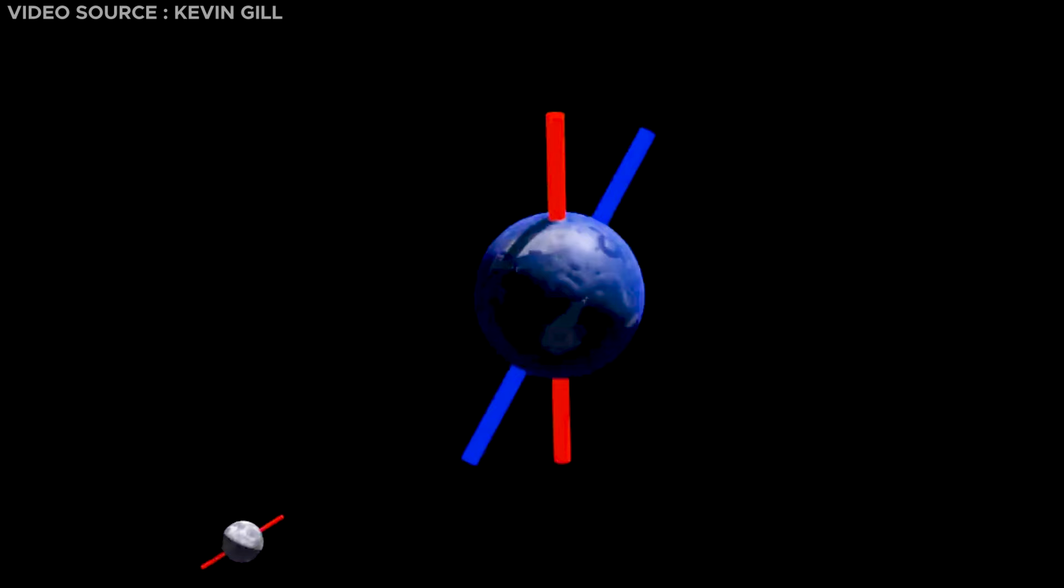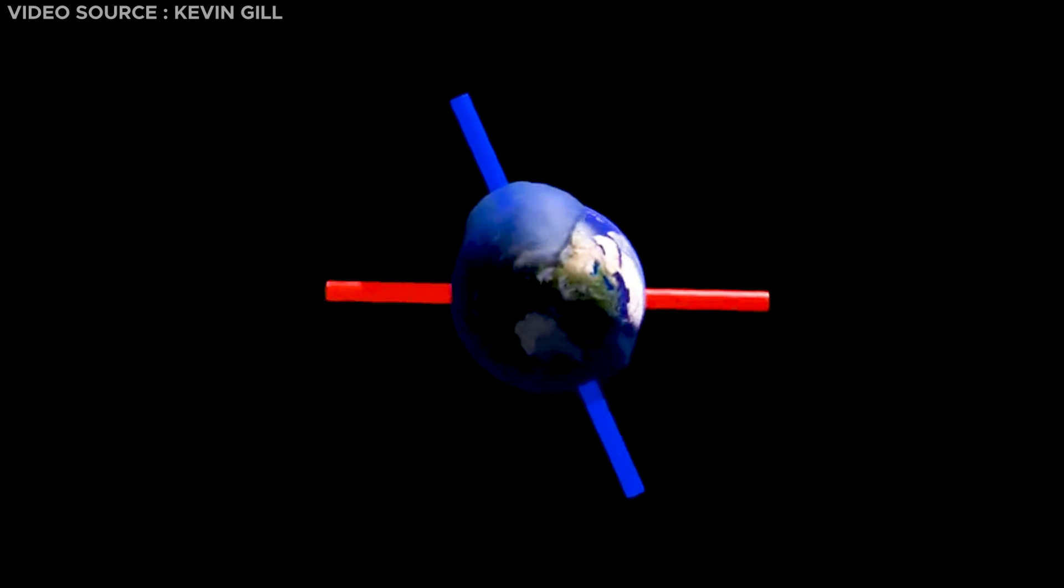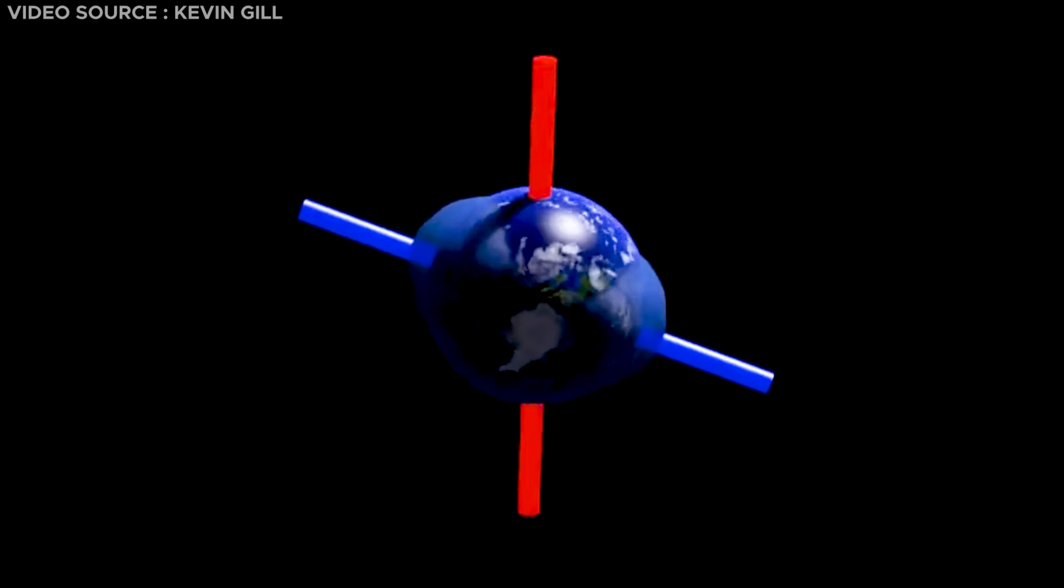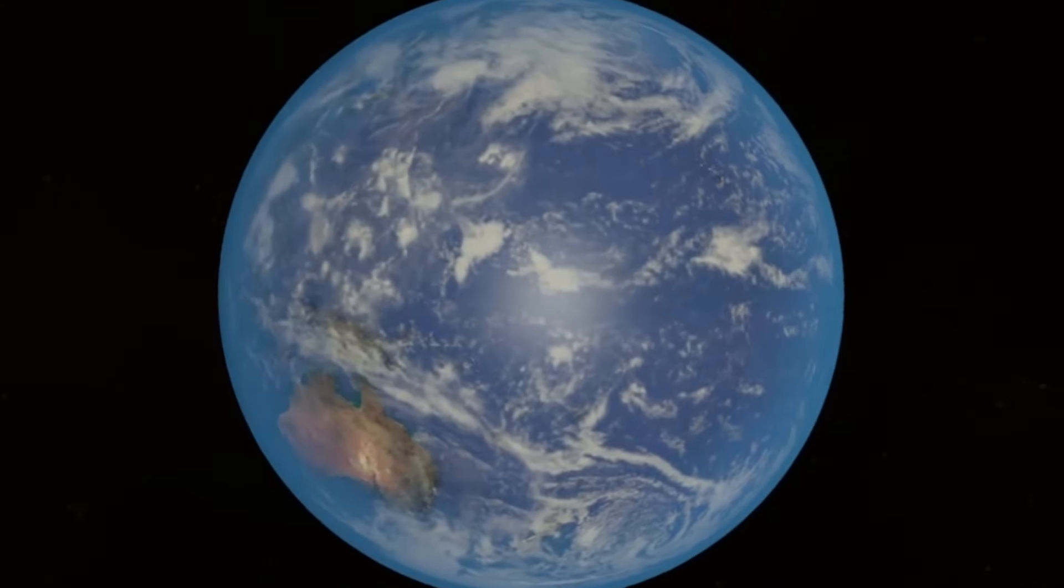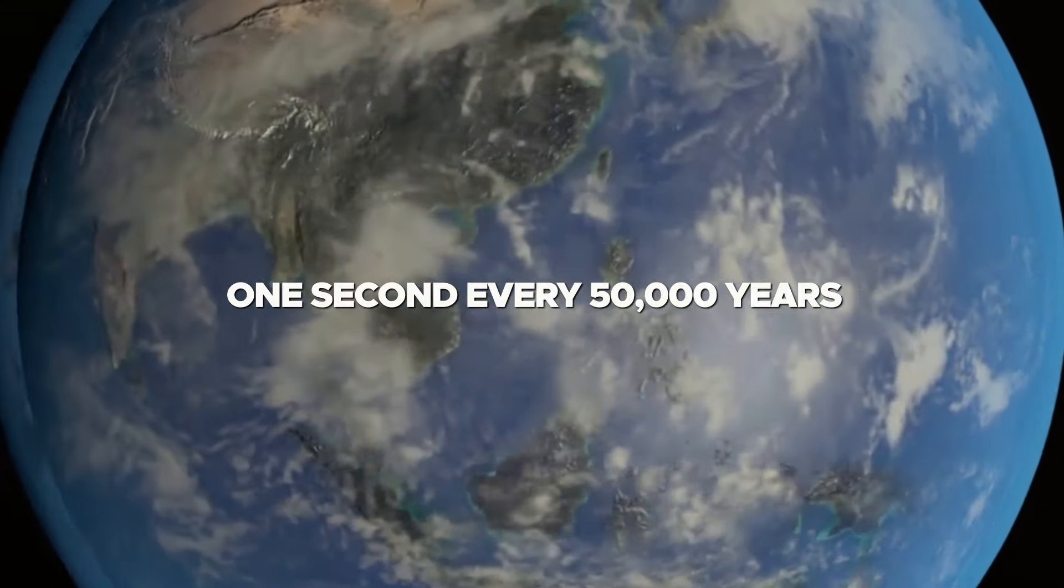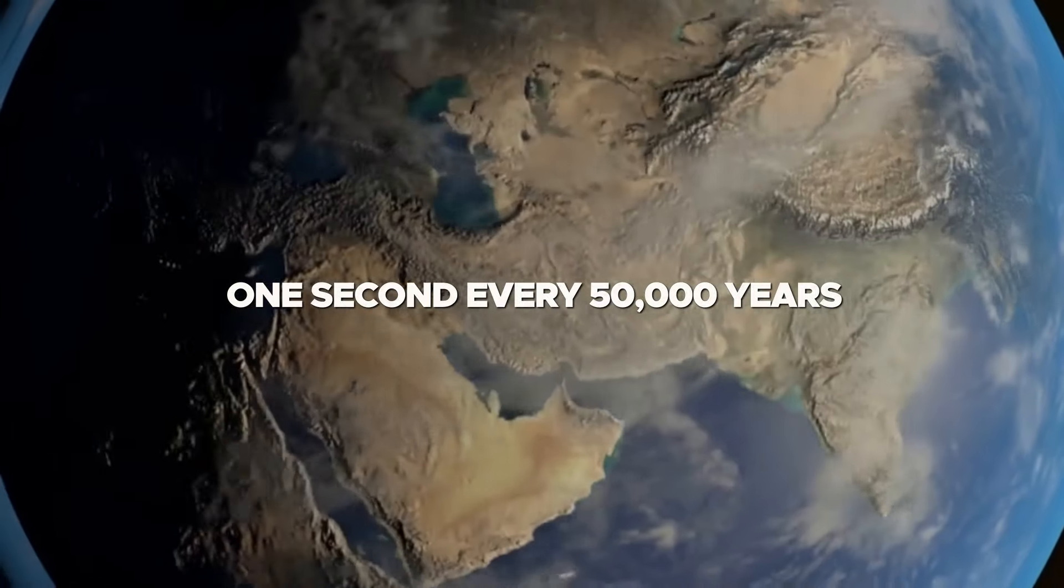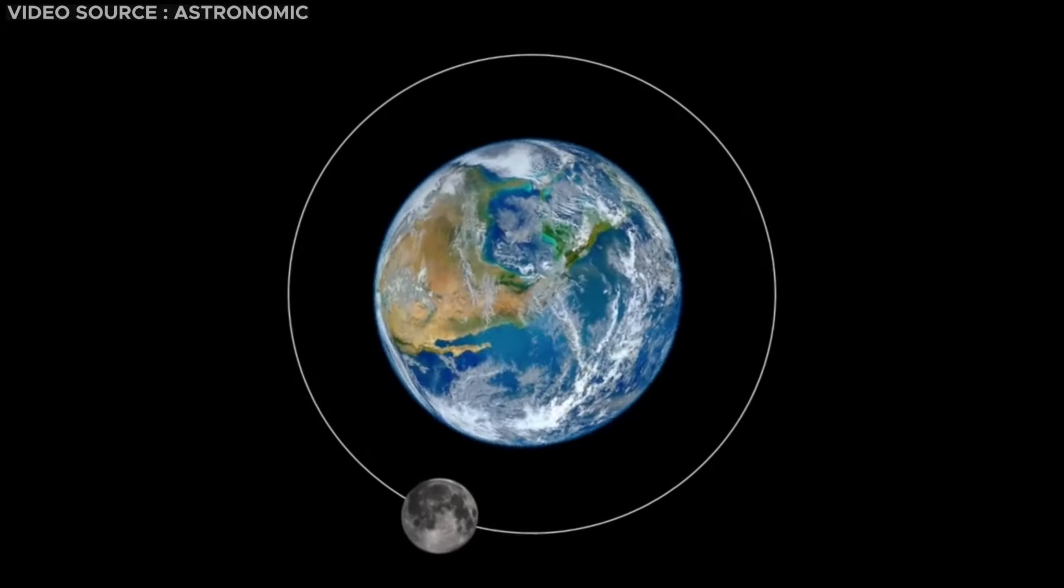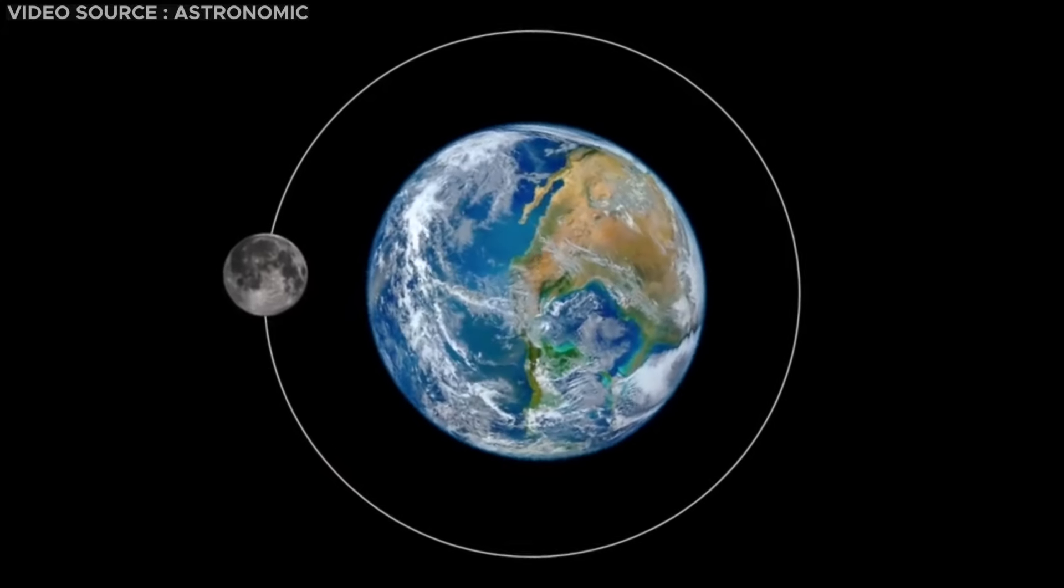The undulating bulges on Earth's surface mimic a rotating wave, exerting resistance against Earth's rotation and contributing to the slowdown. Consequently, the length of a day on Earth expands by one second every 50,000 years as a result of this intricate interplay between gravitational forces and rotational dynamics.